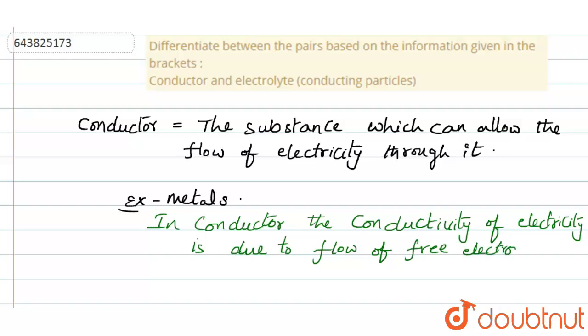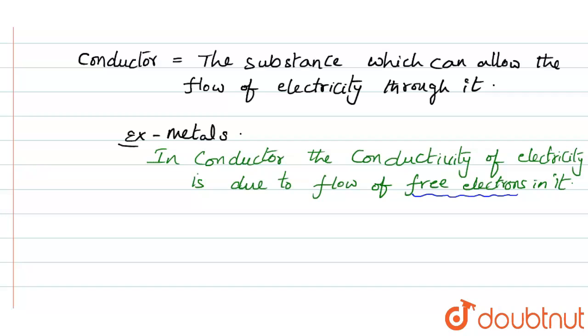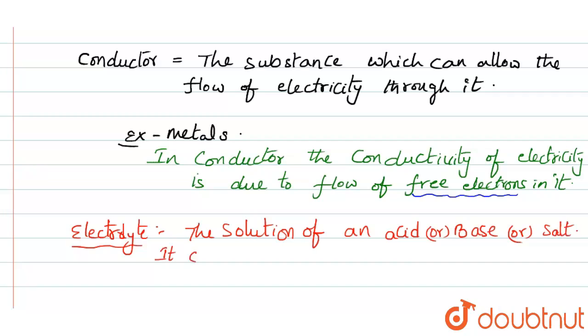In conductors, the conductivity of electricity is due to the flow of free electrons in it. The conductor conducts the electricity by the flow of free electrons in it.